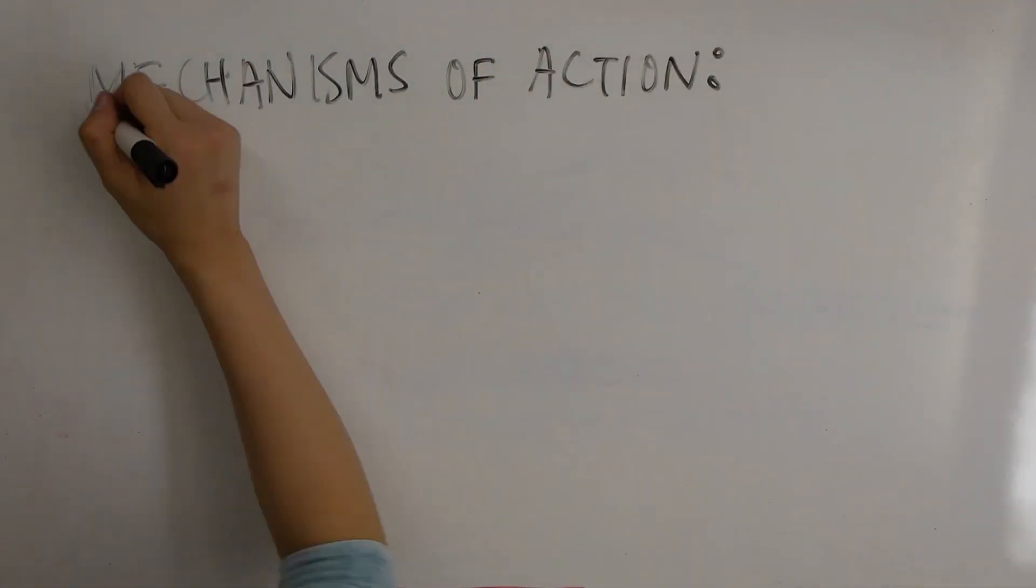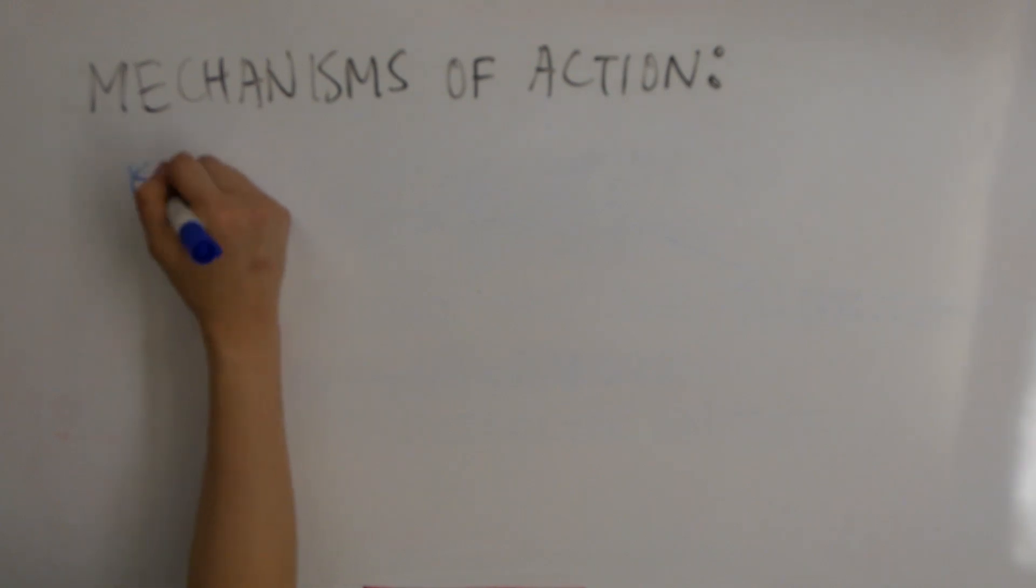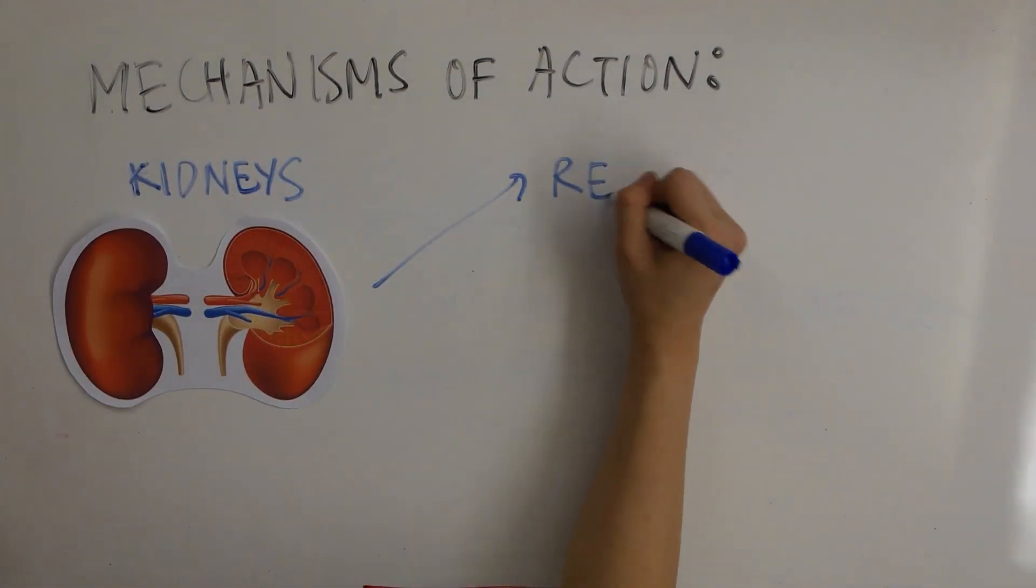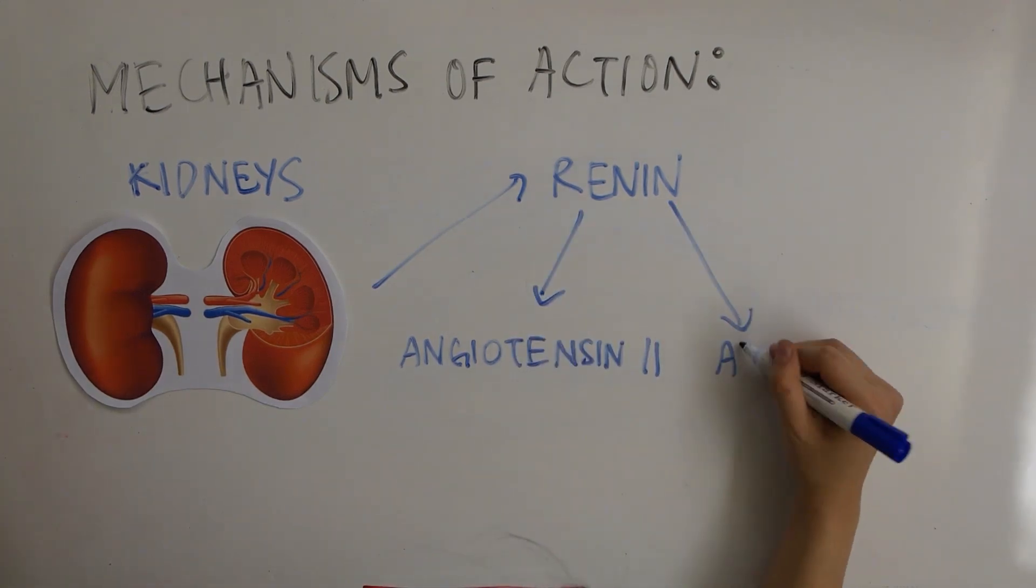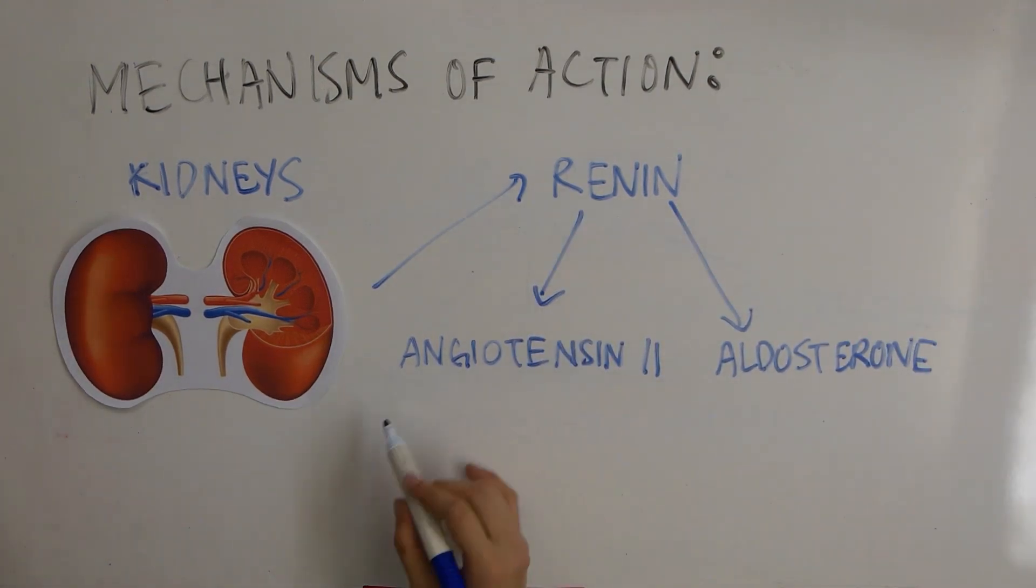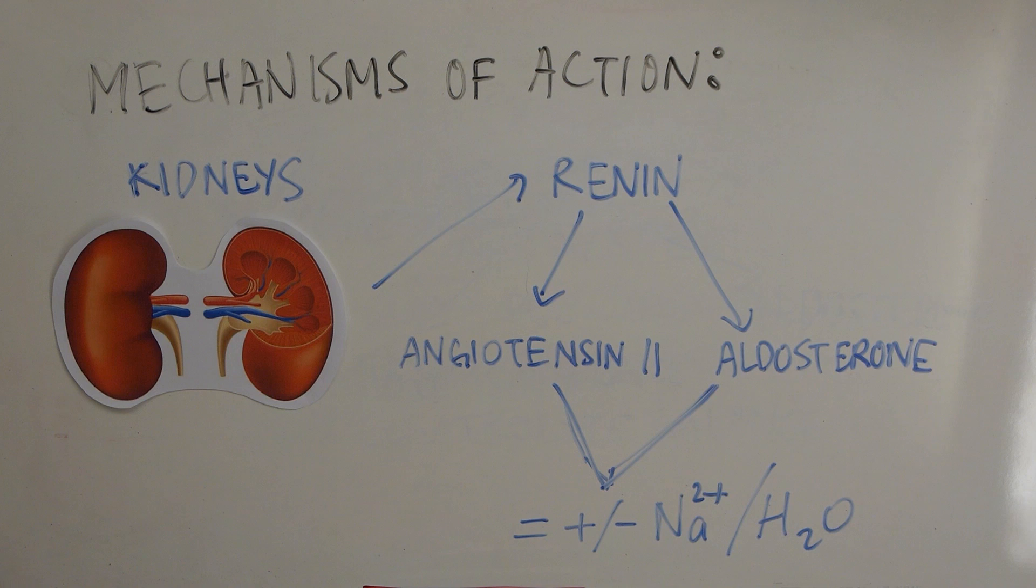In the kidneys, beta 1 adrenoceptors are responsible for the release of renin, which regulates angiotensin 2 and aldosterone. The balance of angiotensin 2 and aldosterone is crucial in the regulation and rate of renal loss of sodium and water, and therefore the regulation of arterial pressure.